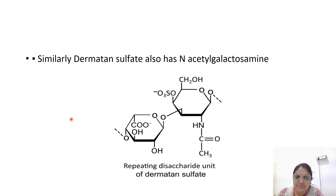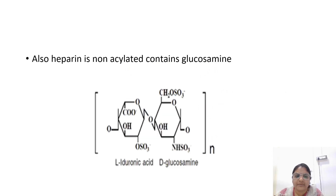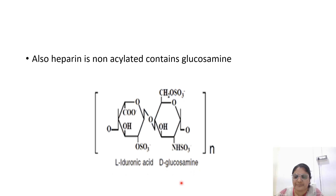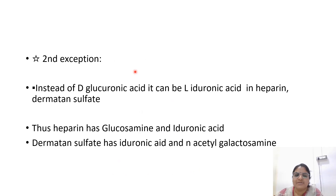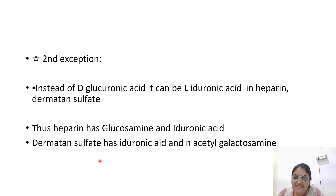Now we will see the structure of dermatan sulfate. Dermatan sulfate also has N-acetylgalactosamine. Also heparin — heparin is non-acetylated and it contains glucosamine, D-glucuronic acid, and L-iduronic acid. So that is the second exception: instead of D-glucuronic acid, it can be L-iduronic acid in heparin and also dermatan sulfate. So heparin has glucosamine and iduronic acid, and dermatan sulfate has iduronic acid and N-acetylgalactosamine.